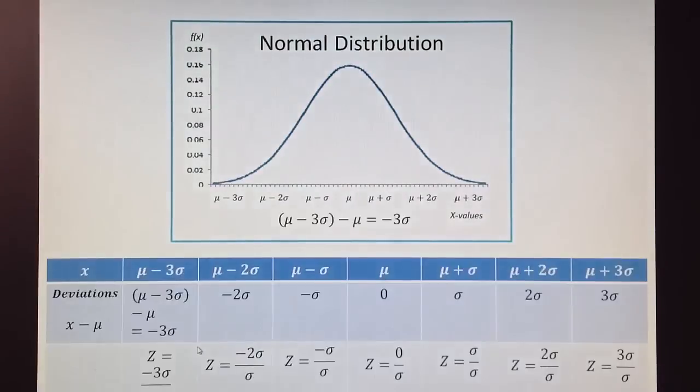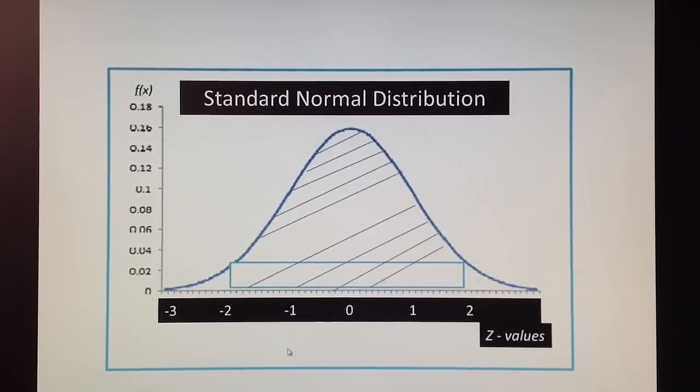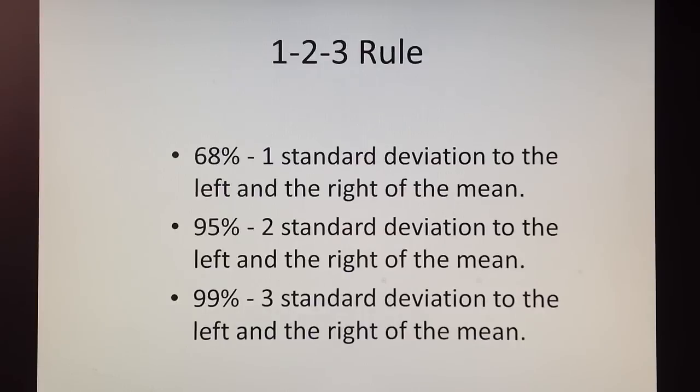Very important characteristic of normal distribution is that z values from negative 3 to positive 3 capture all the data. Also, we have from negative 1 to positive 1 almost 65% of all data is captured. And almost 95% of all data is 2 standard deviations to the left and to the right of the distribution. And this is the 1, 2, 3 rule that you, of course, should remember.